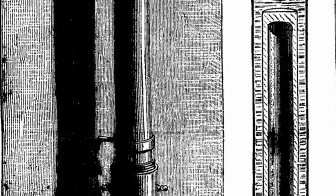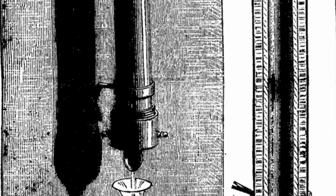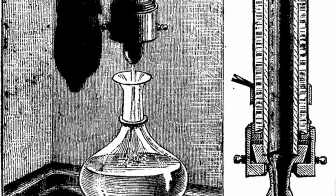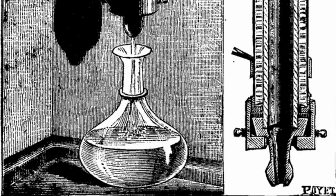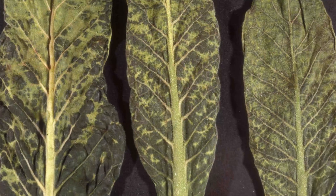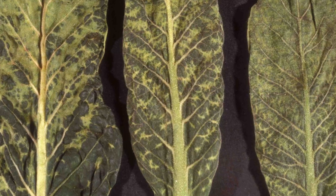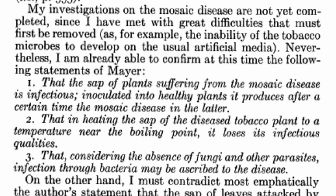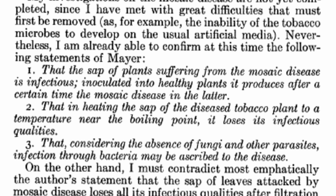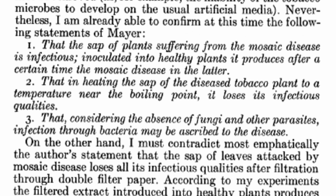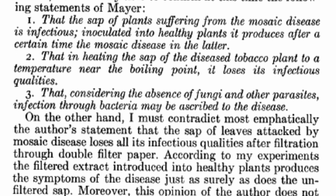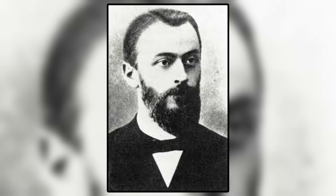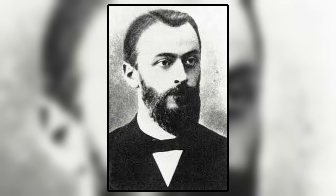Ivanovsky prepared a solution from the infected sap and passed it through the Chamberlain filter, and then tested it on healthy plants. After doing this, he found that the plants could still be infected through the filtered solution. He published these findings in an article in 1892, coming to the conclusion that there must be an infectious agent smaller than bacteria at work in the mosaic tobacco disease. After these experiments, Dmitry moved on to other work and never touched the topic again.